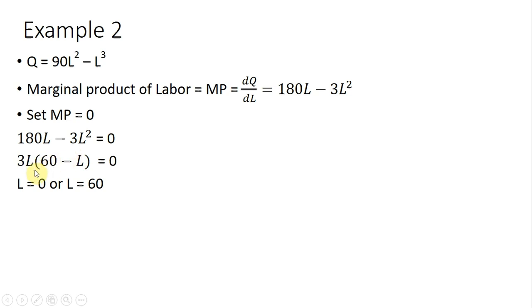On the left-hand side, I factored out a 3L term. So 3L times 60 gets us back to 180L, and then 3L times negative L squared gets us back to minus 3L squared, so this is factored correctly.